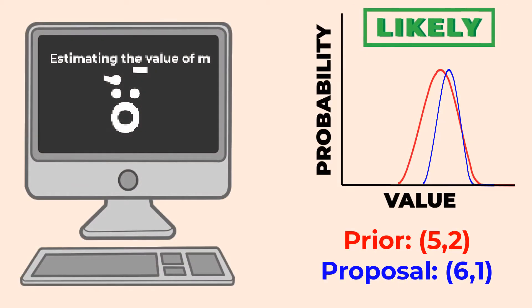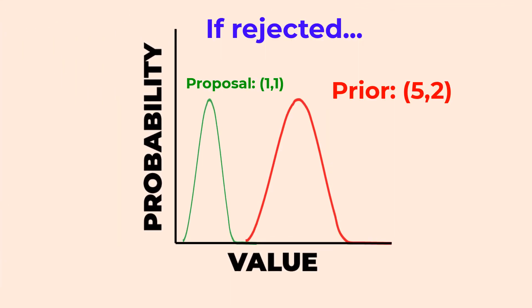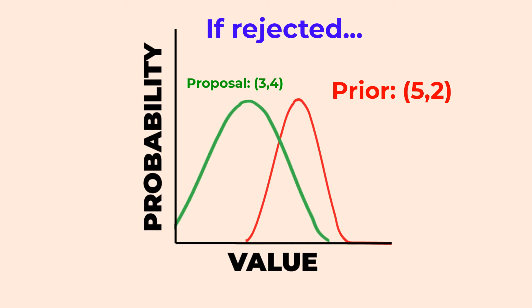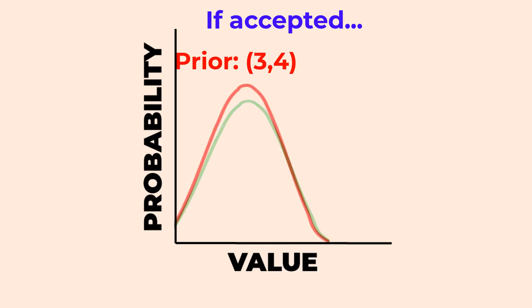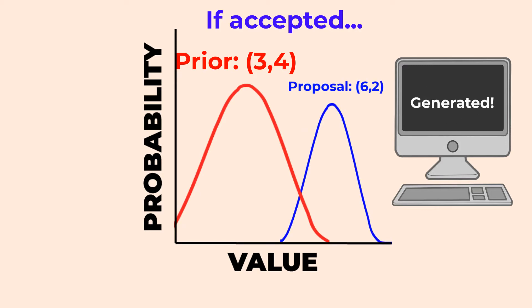So how do we sort these out? Proposal distributions that are likely based on our current distribution are always accepted, but if they're unlikely, they'll be randomly accepted or rejected. If rejected, a new distribution will be proposed. If accepted, the computer uses this proposed distribution and draws a new sample based only on this current information. This randomized process helps us see how susceptible this parameter is to chance in the real world.